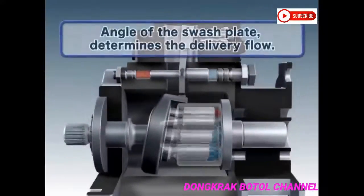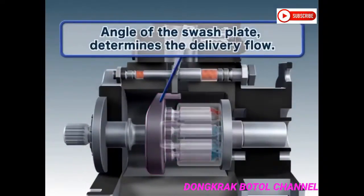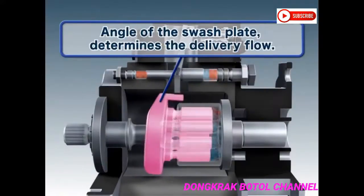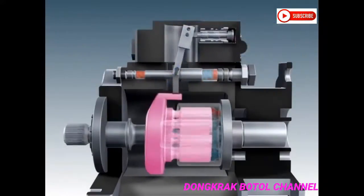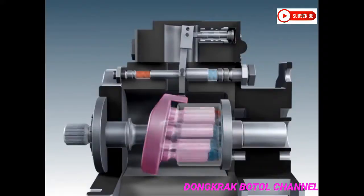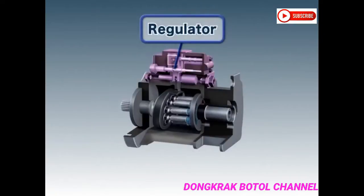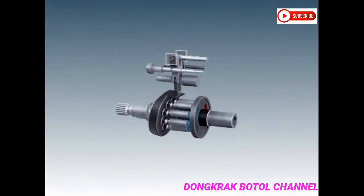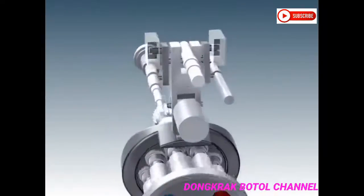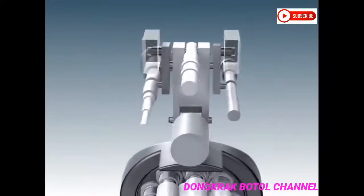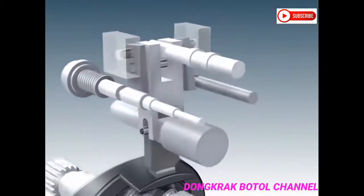The delivery flow can be adjusted by altering the inclination of the swash plate. The delivery flow is controlled by the regulator, which controls the pump output to correspond with the engine output by adjusting the delivery flow.